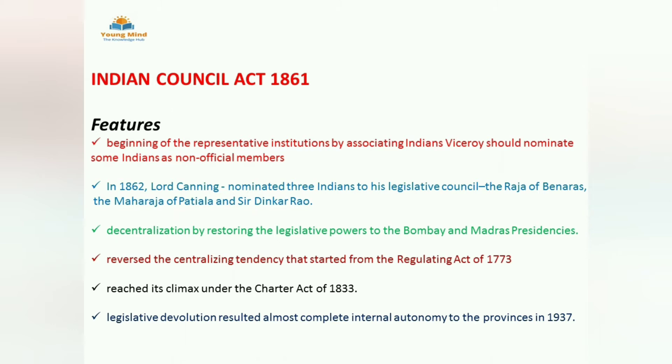These nominees were to show Indians that everything is happening according to their wish — but everything was actually happening according to the British Crown only. Indians were appointed as non-official members, meaning they did not have any power. In 1862, Lord Canning nominated three Indians to his legislative council: the Raja of Benaras, the Maharaja of Patiala, and Sir Dinkar Rao. This is an important question asked many times in UPSC, SSC, and other exams.